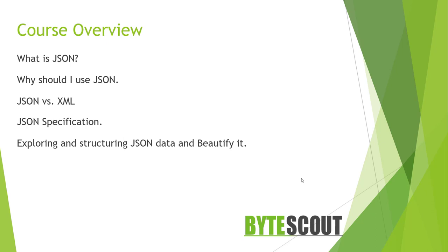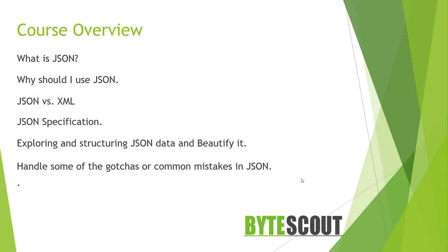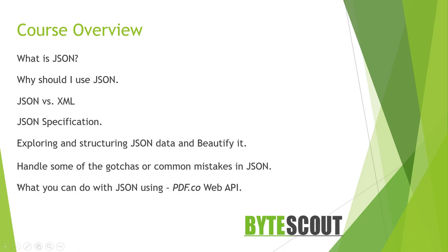We will see how to beautify JSON data using a utility provided by ByteScout. Then we will see some gotchas or common mistakes developers generally make in JSON. And then we will read and manipulate JSON data using the PDF.co web API provided by ByteScout. In this course, I will assume that you have some degree of technical experience in JavaScript and REST API.